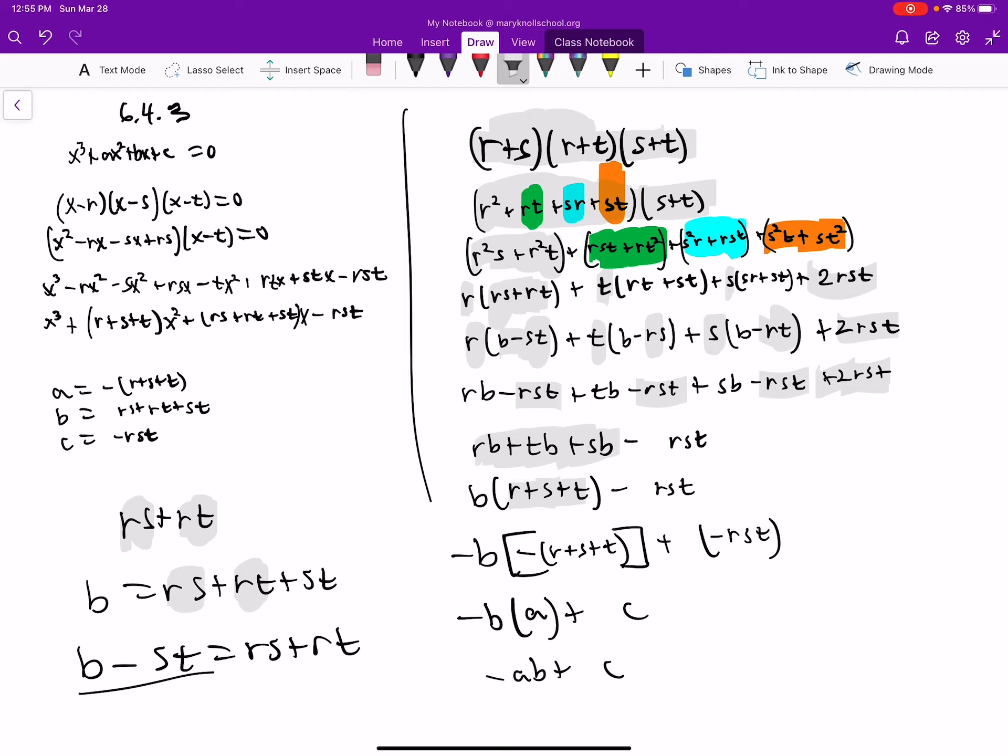Alright, so factor out a negative from both of them—negative here and negative here—and then put in a positive a. Then we're done, we've gotten it.